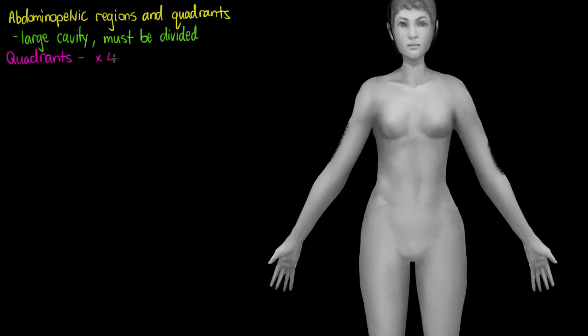So the first naming system we're going to have is the quadrants which there are four of. Quadrants are used much more by practitioners, so hospital workers and doctors. It's the abdominal pelvic cavity split into these four segments that you see on the screen here.